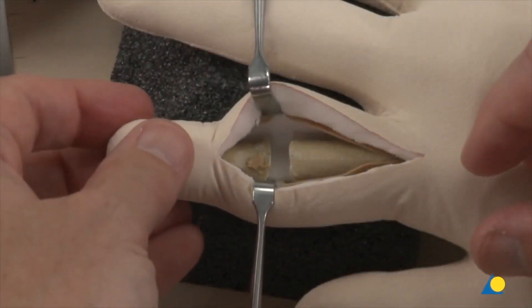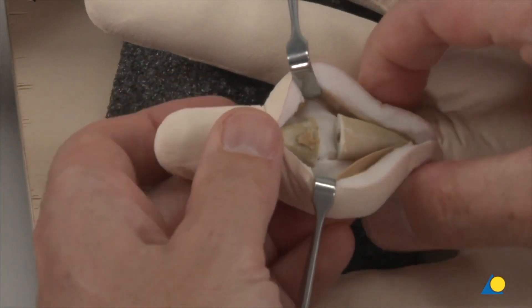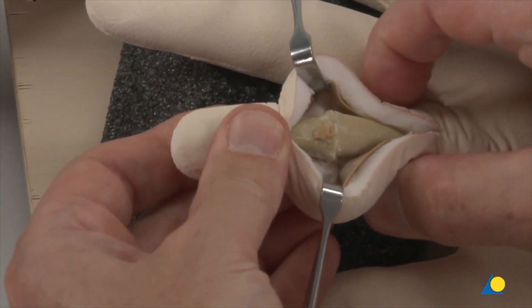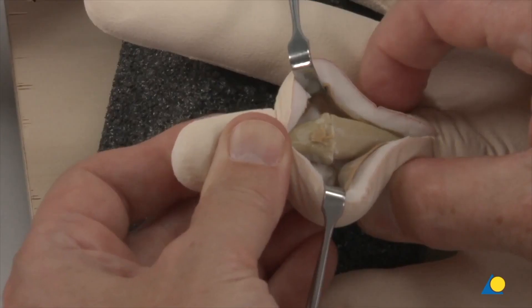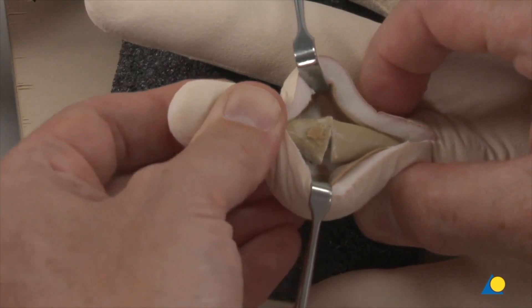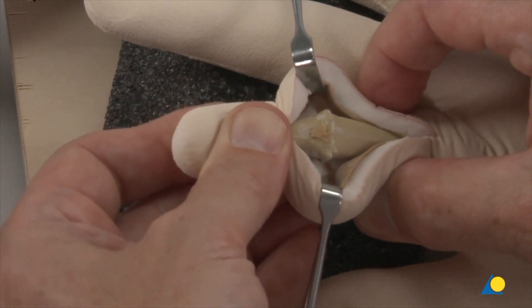By putting the two flat osteotomy surfaces together, the intended angulation in flexion is checked as well as the angulation in both ulnar and radial directions. The osteotomy surfaces can now be aligned.